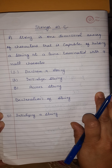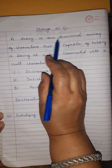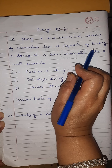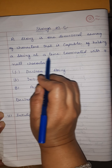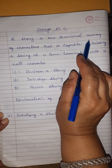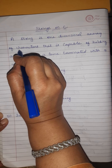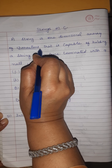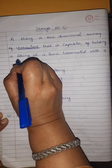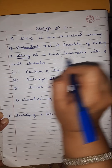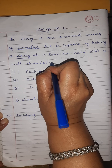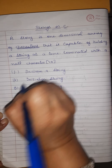Now, what is a string in C? A string is a one-dimensional array of characters that is capable of holding a string at a time. It is terminated with a null character. Whenever we need to terminate a string, we terminate it with a null character.